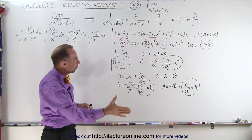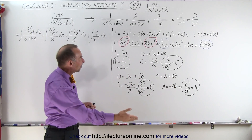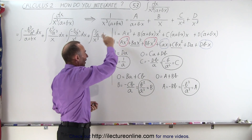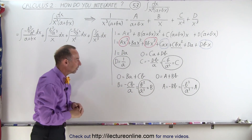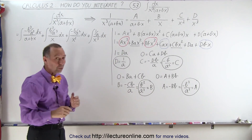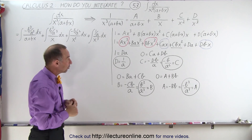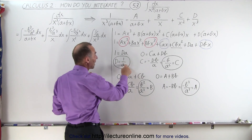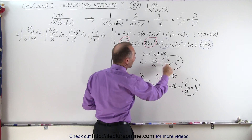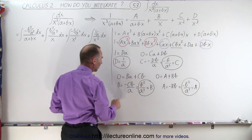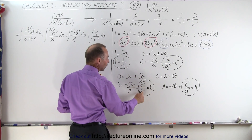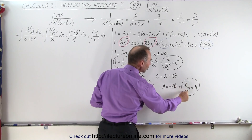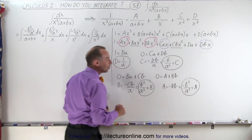We do the same thing for x to the second power and x to the third power. We just add the coefficients on the right side and set it equal to 0 on the left side, since we don't have an x, x squared, or x cubed term on the left side. When we solve for each of those equations, we have d equals 1 over a, c equals minus b over a squared, B equals b squared over a cubed, and A equals minus b cubed over a cubed.